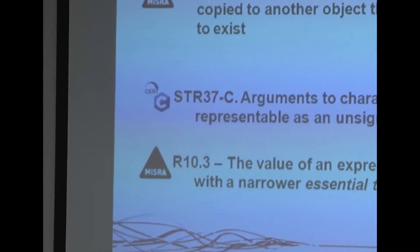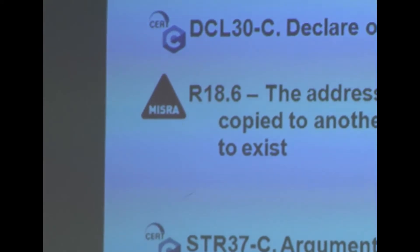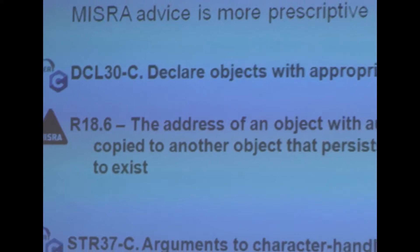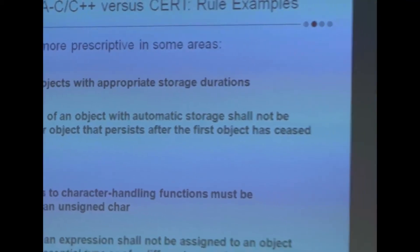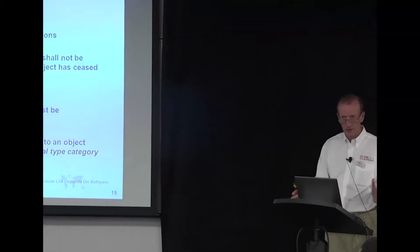You can see the CERT rule icon on the left and the MISRA icon. The CERT rule name DCL is in the declaration grouping, with an actual rule number beside it, while MISRA has rules in different chapters of the document. CERT has a generic rule: declare objects with appropriate storage durations — good general advice. MISRA is more specific and prescriptive, stating that the address of an object with automatic storage shall not be copied to another object that persists after the first object has ceased to exist.